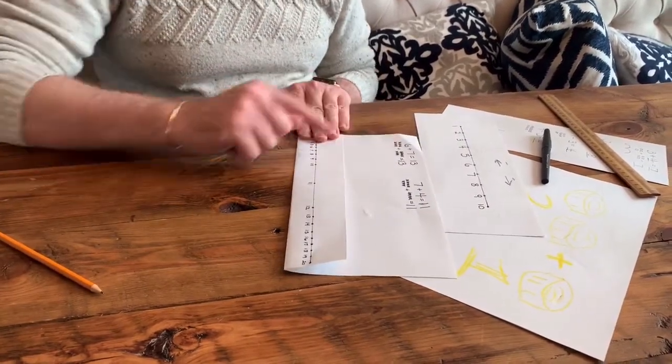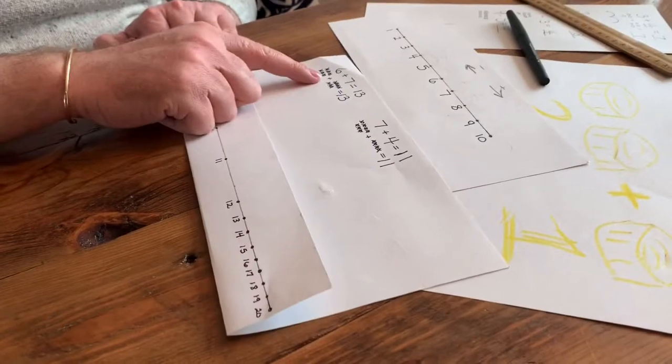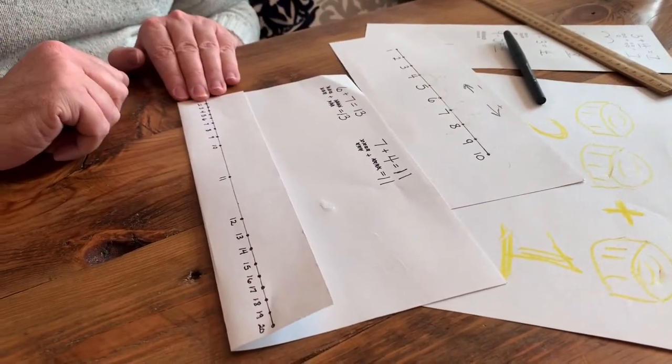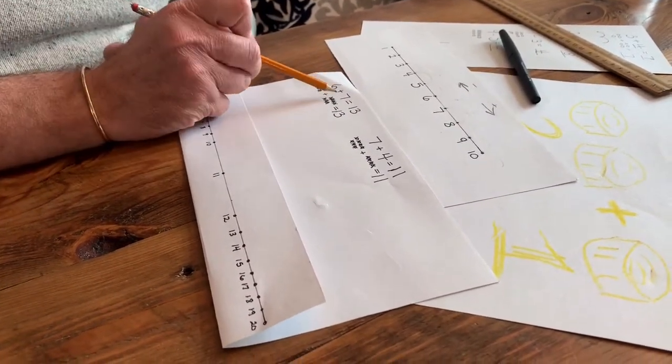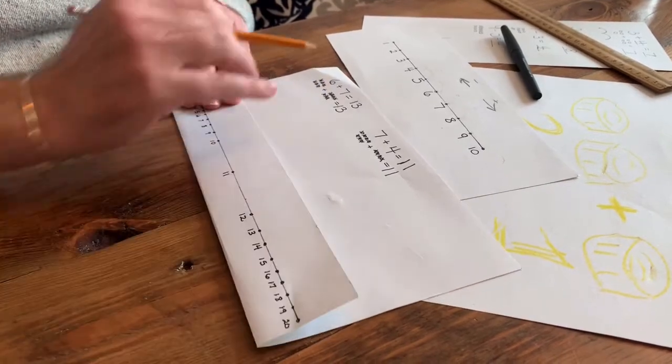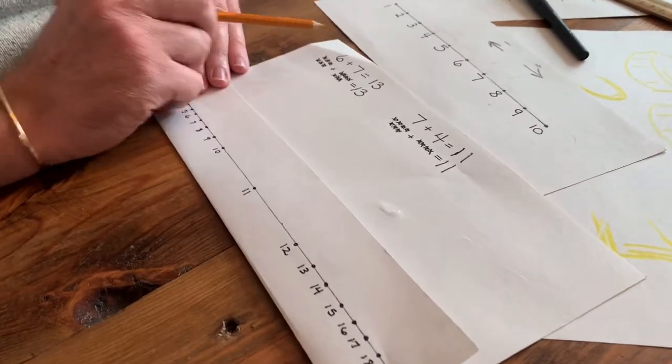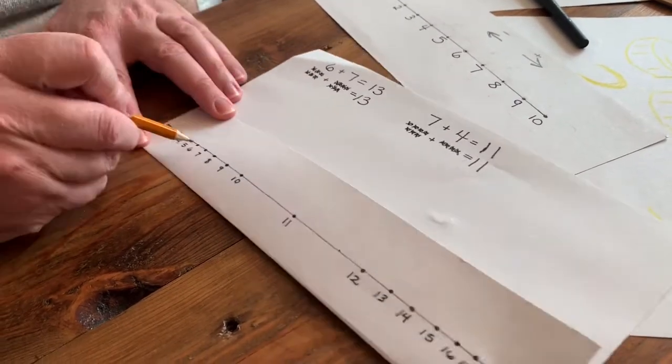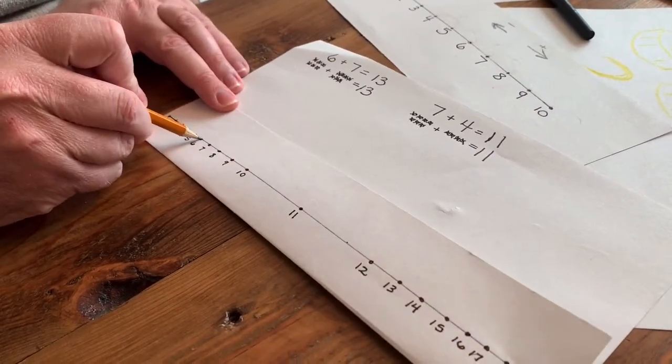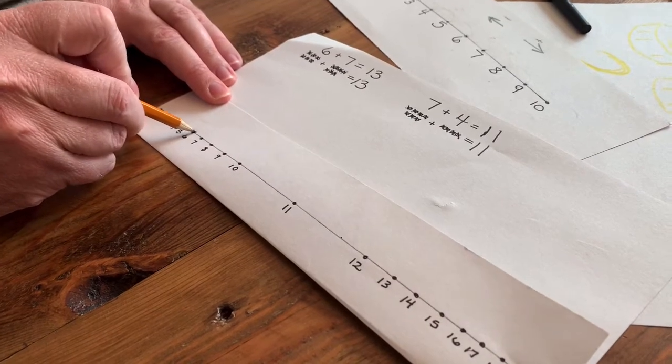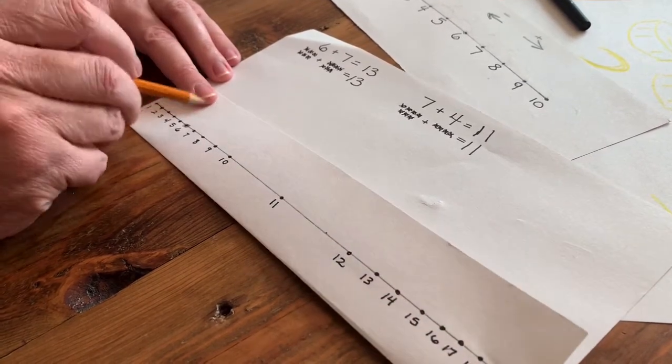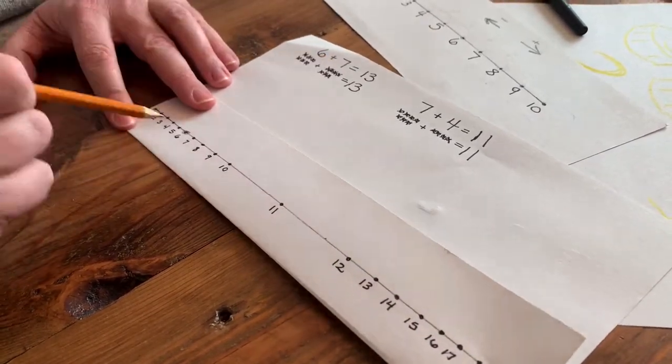So I'm going to show you a quick way to use the number line when adding, and then we're going to do some challenge subtraction. So we're just going to use the problem we have here already. We know the answer, but that's okay. We're just going to show how to do it. So 6 plus 7, we're going to start at 6. So I'm going to put my dot, my pencil on the dot of 6. I'm actually going to circle it and I'm going to do my leapfrog seven times.